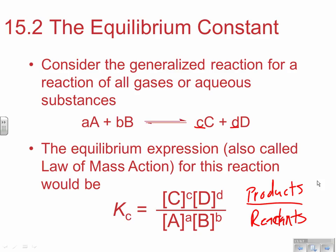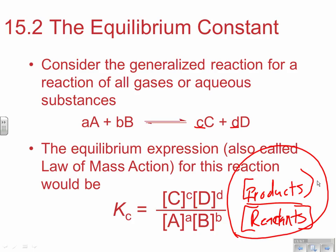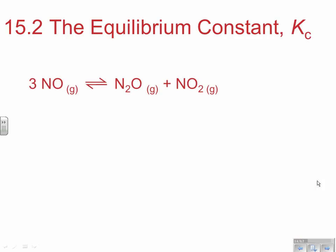Each species is raised to the power of its stoichiometric coefficient from the balanced equation. Substance C is raised to its stoichiometric power, D is raised to its power, and the same is true for reactants A and B. Every equilibrium expression is a concentration of products compared to a concentration of reactants — a core idea in every equilibrium situation in chemistry. Equilibrium constants are always a ratio of products to reactants. This law is also referred to as the law of mass action, which is just another name for the equilibrium expression.